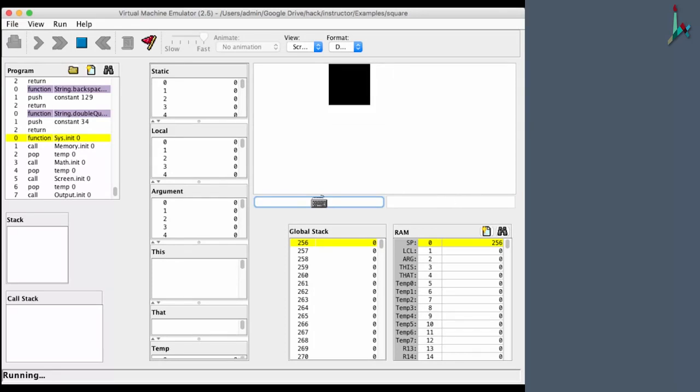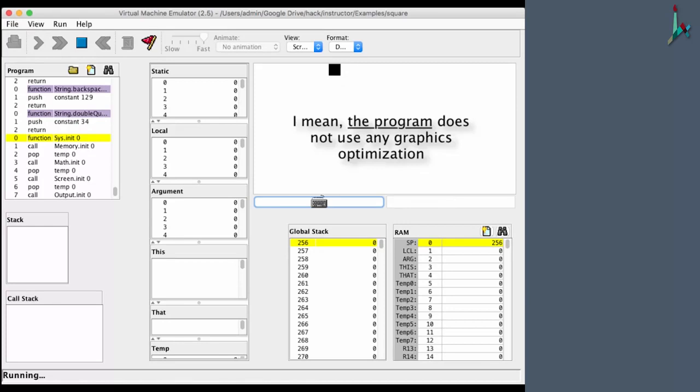I can make it smaller. If I click the Z key, each time I click, it becomes smaller. The visual effect is not very delicate because I didn't use any graphics optimization. I mean, the program does not use any graphics optimization. At some point, the square will become so small that maybe it will even completely disappear. But actually, I see that there is still a small square surviving here. Apparently, that's how the program is written.